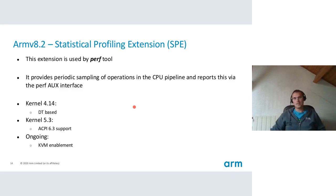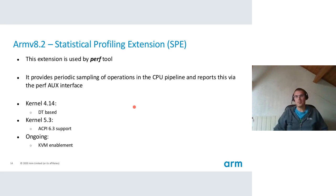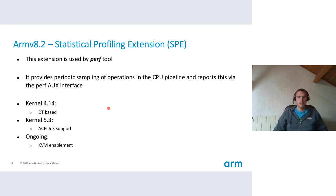Another one is ARMv8.2 SPE — Statistical Profiling Extension. This is an extension used by the perf tool. It provides periodic sampling of operations in the CPU pipeline and reports this via the perf aux interface. Since kernel 4.14 we have it enabled with device tree, and for ACPI it's been available since kernel 4.3. KVM enablement is ongoing work at the moment.